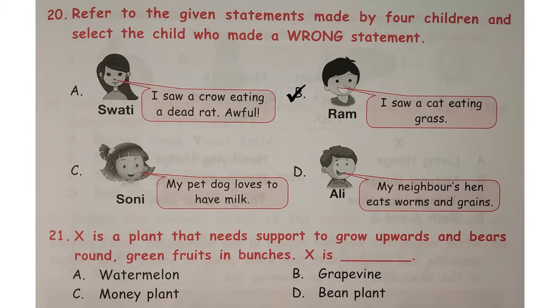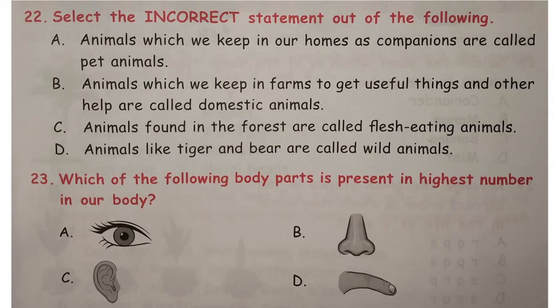Question number 21: X is a plant that needs support to grow upwards and bears round green fruits in bunches. X is dash. The correct answer is option B — grapevine. Because watermelon is a creeper that grows along the ground, and money plant and bean plant are climbers but do not have green fruits in bunches. So the answer is option B, grapevine.